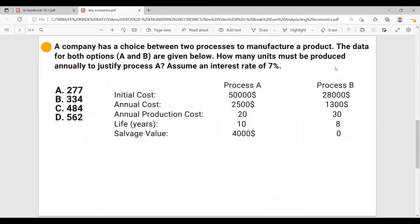A company has a choice between two processes to manufacture a product. The data for both options A and B are given below. How many units must be produced annually to justify process A? Assume an interest rate of 7%. So from the get-go, we are asked how many units must be produced annually to justify process A. So let's assume that the number of units produced annually is X.